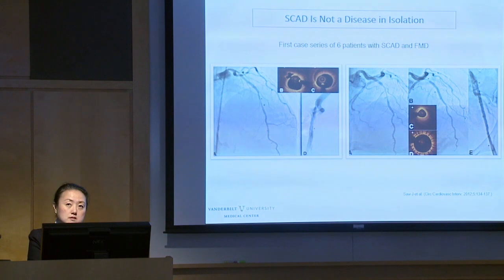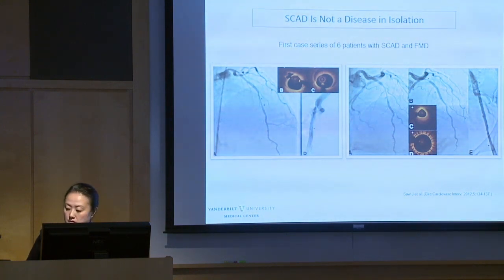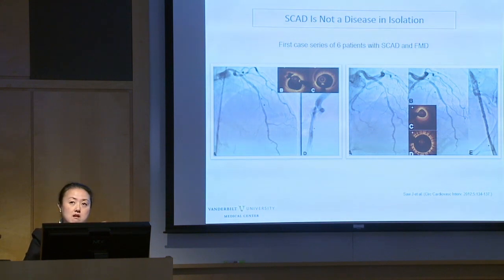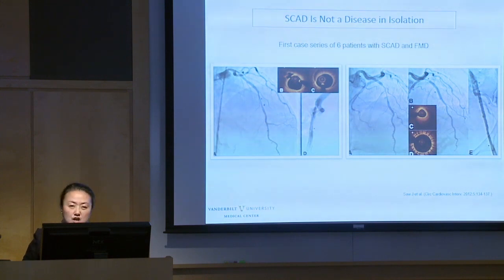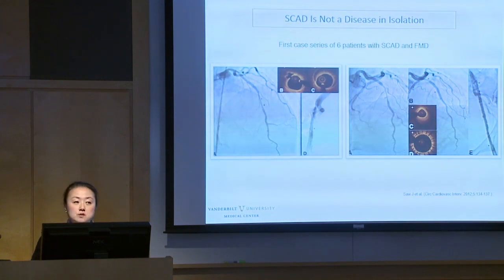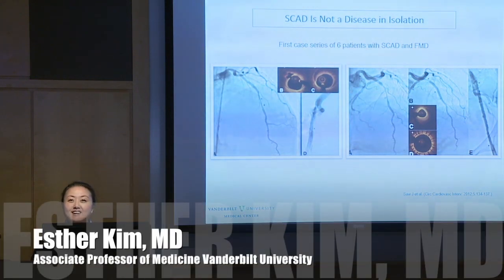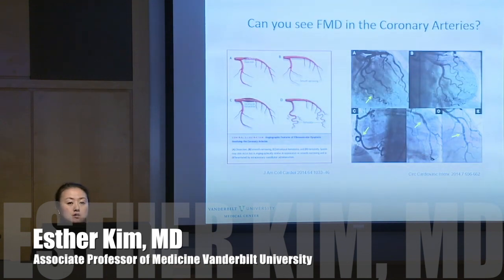Dr. Saw wanted to publish more cases of SCAD and FMD but had to prove these were actual coronary dissections. This is where the tides turned — we were able to show that these long smooth lesions, without the visible tear, when examined using OCT (a camera down the artery looking at the artery walls), you can see the tear and what I call a bruise in the artery — the intramural hematoma — demonstrating this is still coronary dissection.